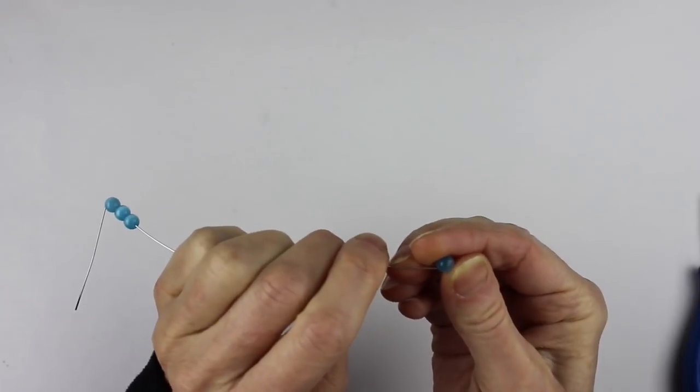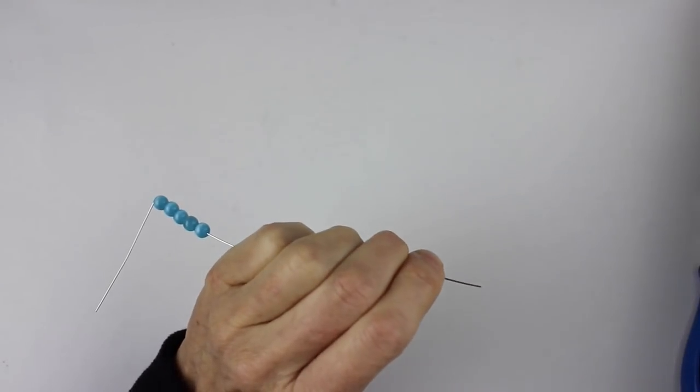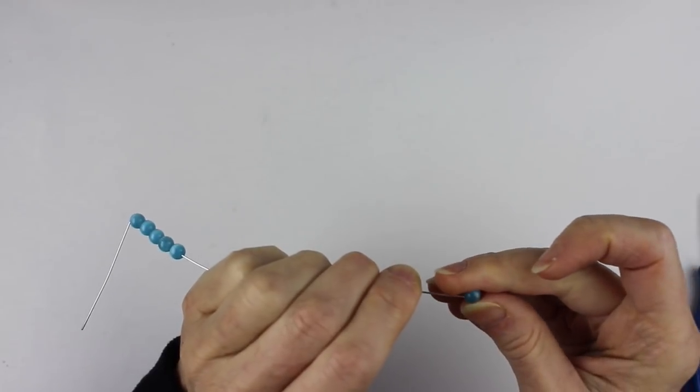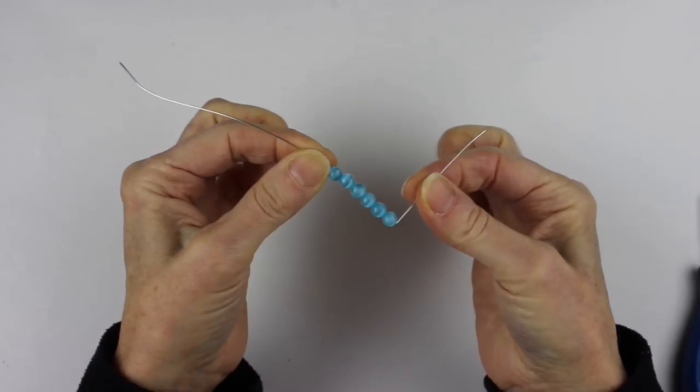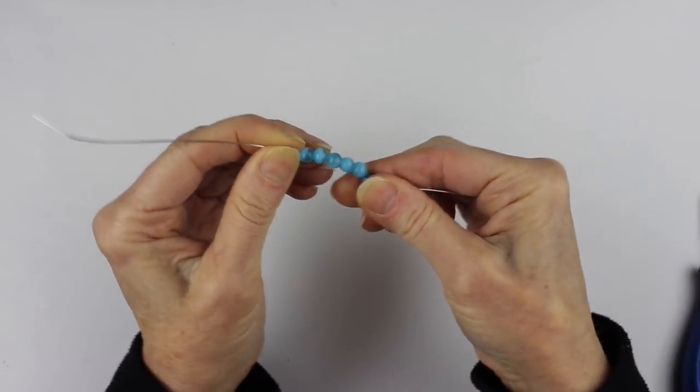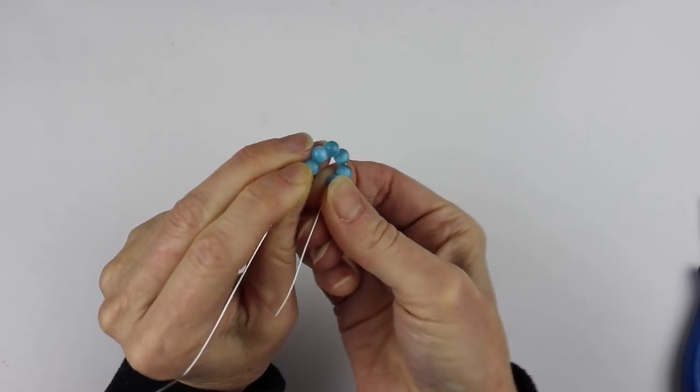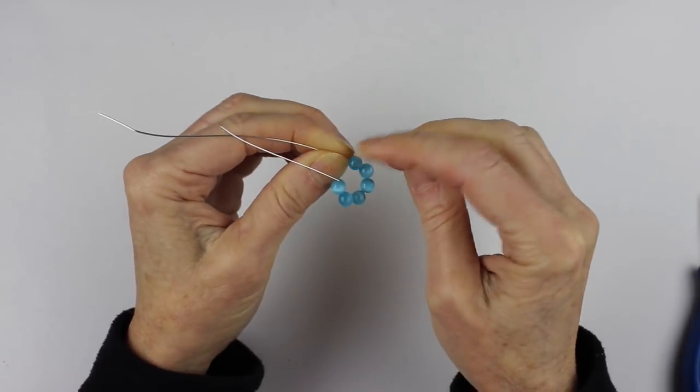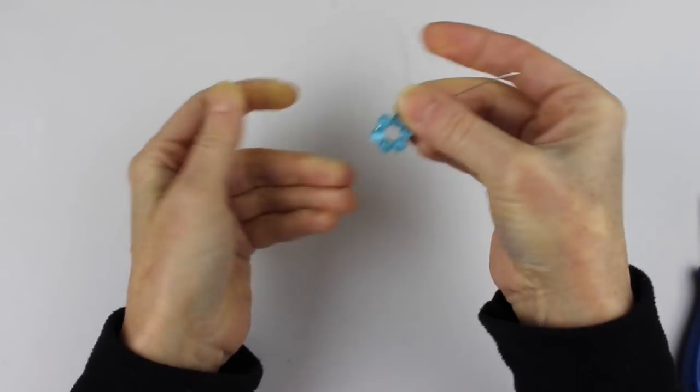You can do all the daisy flowers the same color for the bracelet or you could do them different colors to make it more colorful for the spring. So there you have your 6 beads and you're just going to hold the end and just slowly turn it around like that holding this one in place so it doesn't slide. You're going to make the complete circle.